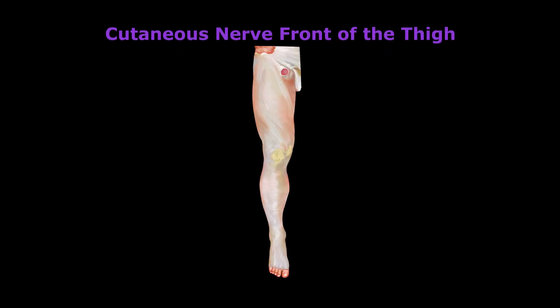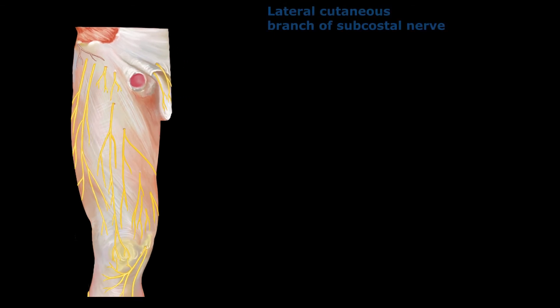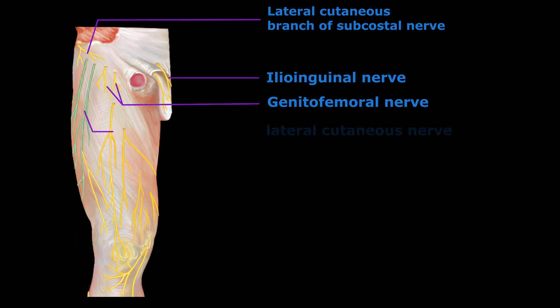Now we are going to discuss the cutaneous nerves of the front of the thigh. The entire skin of the front of the thigh is supplied by seven cutaneous nerves derived directly or indirectly from the lumbar plexus. The skin over the upper lateral part of the thigh is supplied by the lateral cutaneous branch of the subcostal nerve. The important cutaneous nerves are: the ilio-inguinal nerve, the femoral branch of the genitofemoral nerve, and the lateral cutaneous nerve of the thigh.